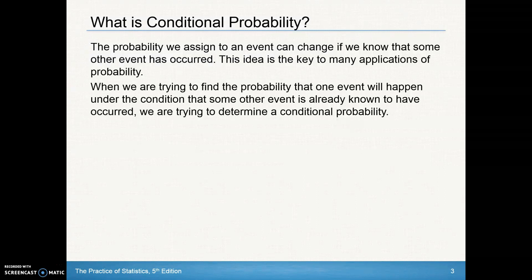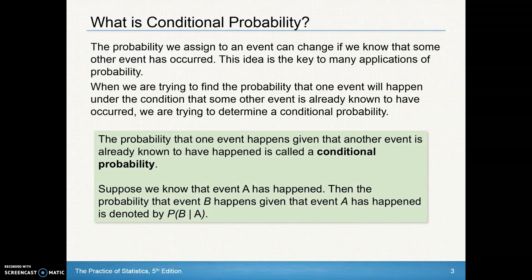So what is conditional probability? The probability we assign to an event can change if we know that some other event has occurred. This idea is key to many applications of probability. When we're trying to find the probability that one event will happen under the condition that some other event is already known to have occurred, we are determining a conditional probability.